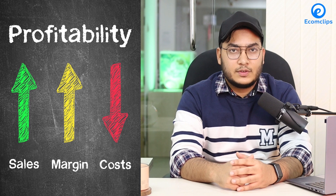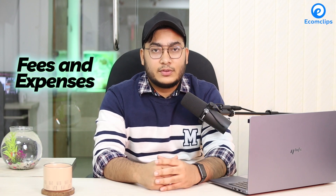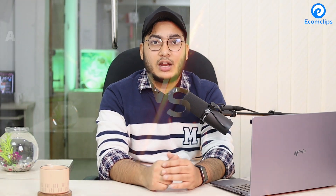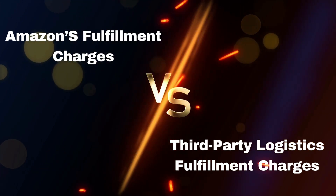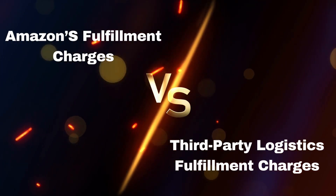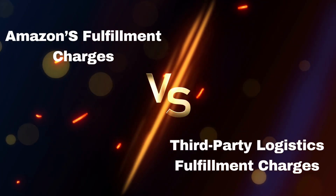Amazon FBA Calculator, or Amazon Revenue Calculator, is an analytics tool for sellers to estimate the profitability of a product when using the FBA service. This easy-to-use tool lets you quickly calculate your potential profits as well as your fees and expenses. With the help of this revenue calculator, sellers can approximately compare Amazon's fulfillment charges with the cost of any other third-party logistics order fulfillment services.